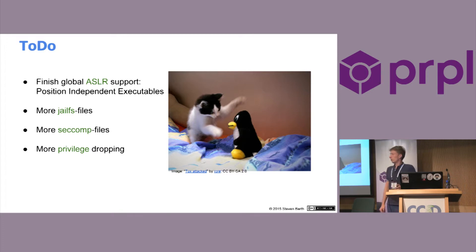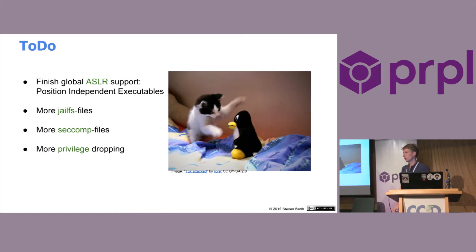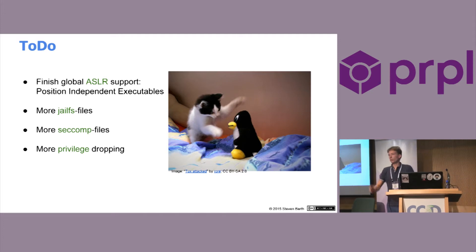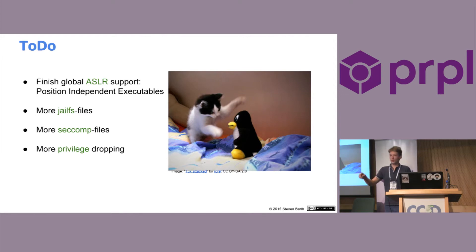On the hardening side, there's one big thing missing for full address space layout randomization: we need to build all our executables as position-independent code. At the moment, only the libraries are built like that because libraries are usually relocatable. On Linux, the executables aren't, so they are mostly loaded into fixed addresses. We have to get this in, but it's a bit tricky and cumbersome — you don't want to do it for every package manually, so you have to add it to the toolchain in some way.